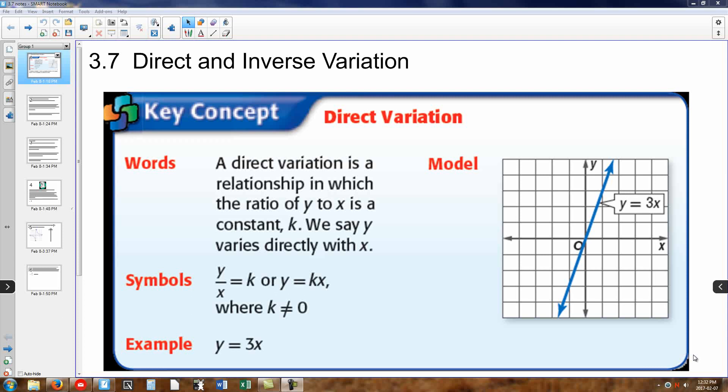Today we're going to be working with the concept of direct variation and inverse variation, or sometimes referred to as indirect variation. Direct variation is a really straightforward equation. It's an equation that is essentially a linear equation that passes through the origin. So all of these direct variation questions today will satisfy the equation as an ordered pair (0, 0).